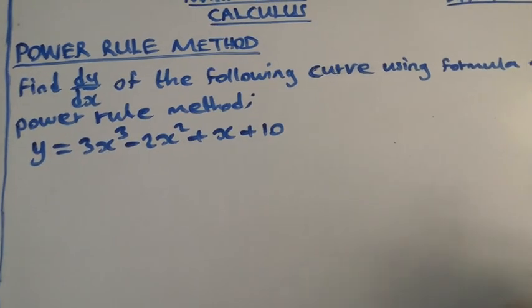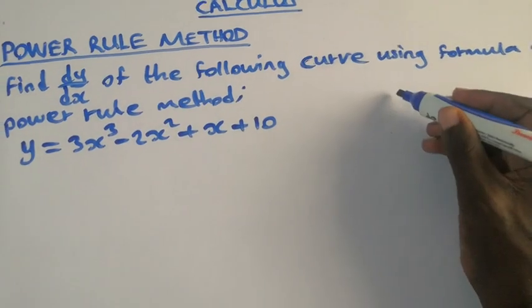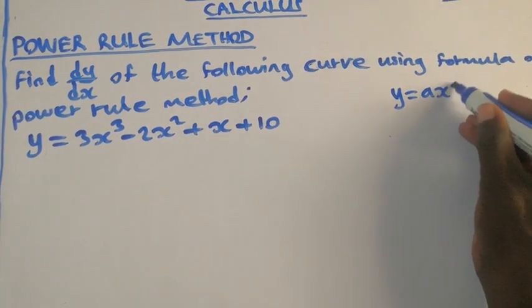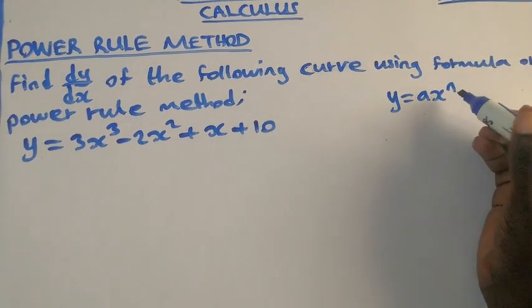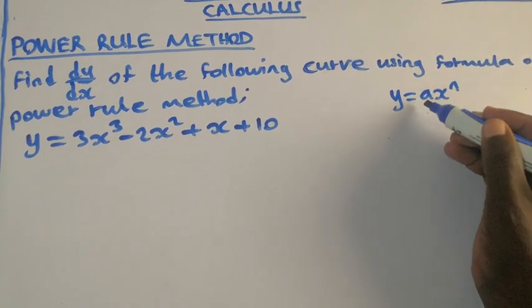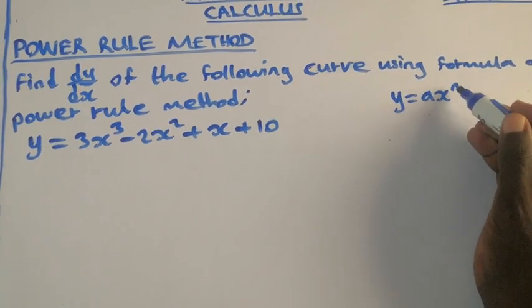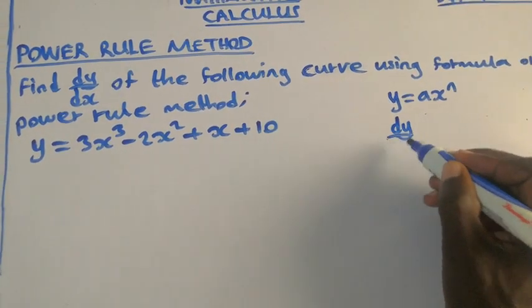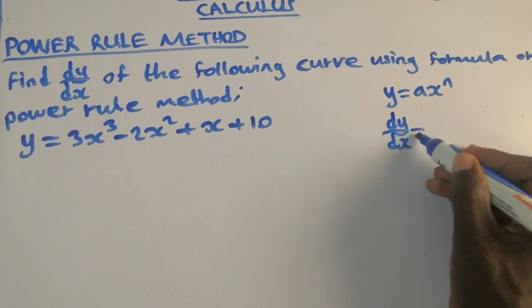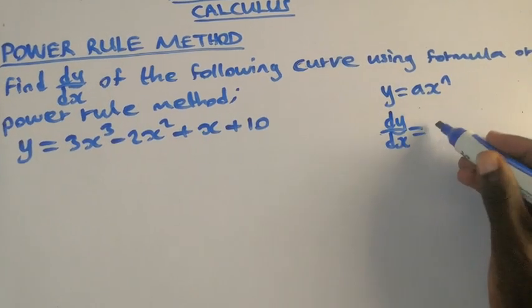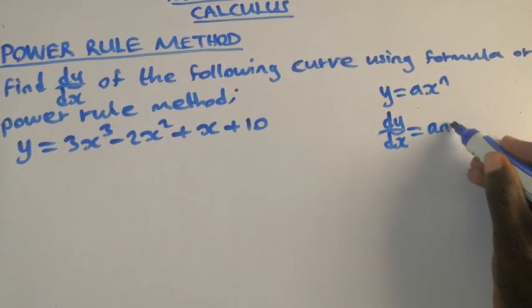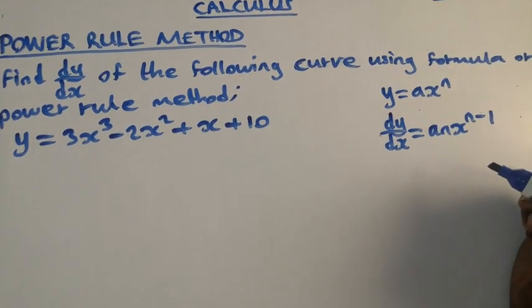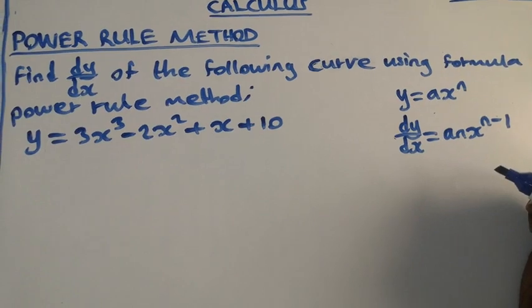So power method states that when you have a curve y = ax^n, we have to multiply power to the coefficient of x, then power should be reduced by 1. So we are going to have dy/dx = n times a, x to the power n - 1. So this is the law they want us to apply.